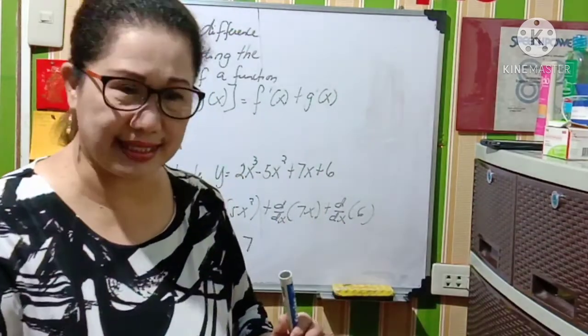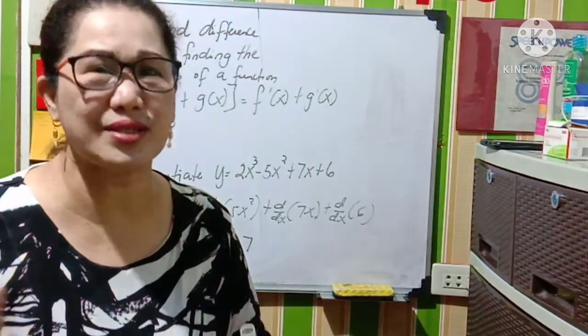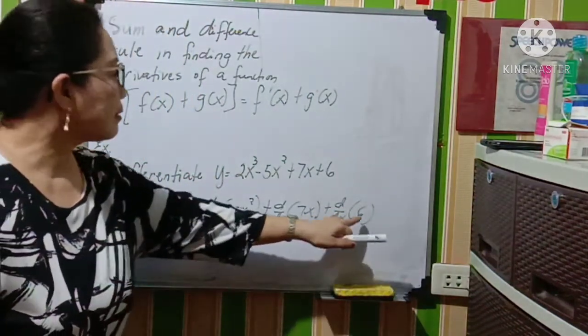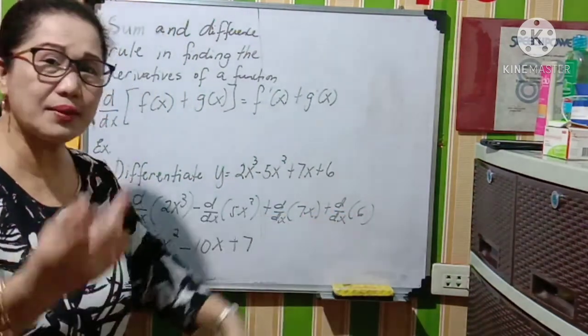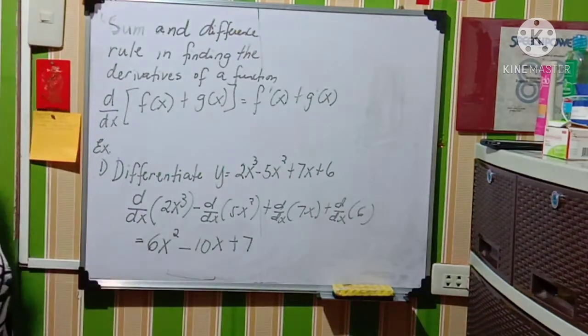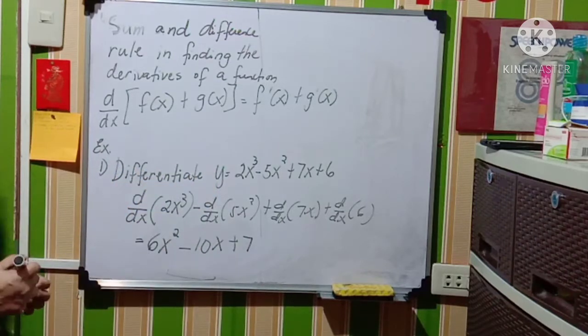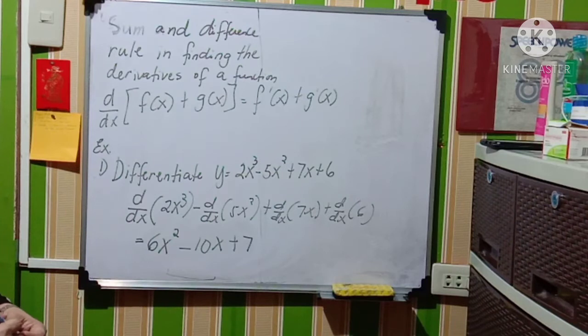And in constant rule, all derivatives of constants are always equal to 0. So 6 is constant, then the derivative of 6 is equal to 0. So you don't need to put the value of 0 here.